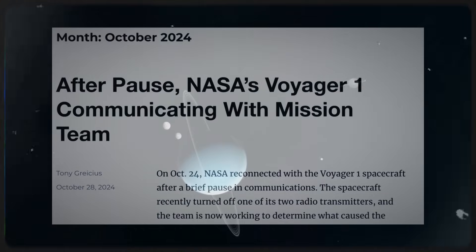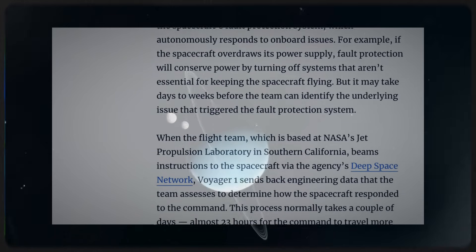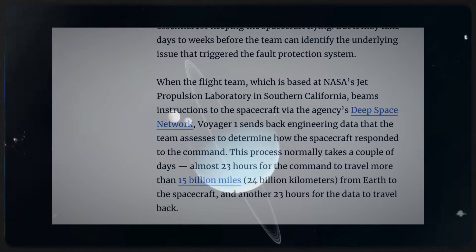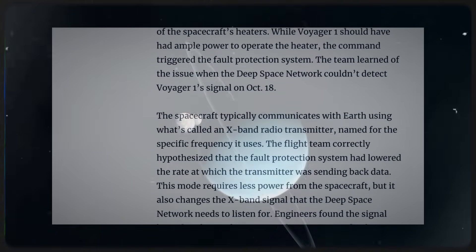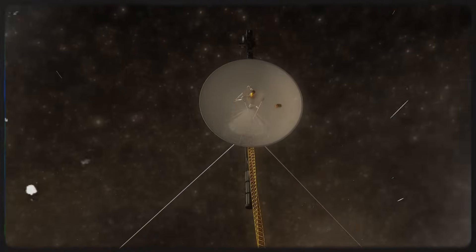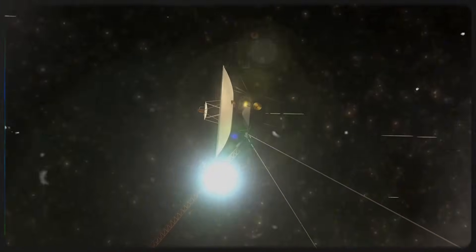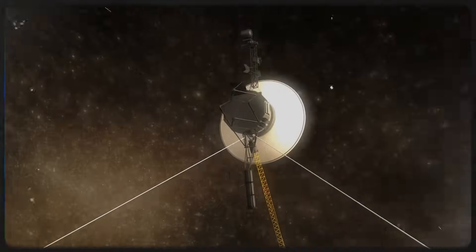In October 2024, NASA's Voyager 1 faced a significant communication issue that put its remarkable durability to the test. On October 16, engineers sent a routine command to activate one of the spacecraft's heaters. The purpose was to maintain optimal temperatures for certain instruments on board, a regular procedure to ensure their continued functionality in the harsh conditions of space.